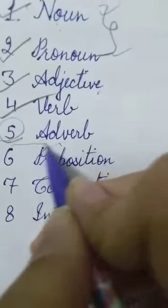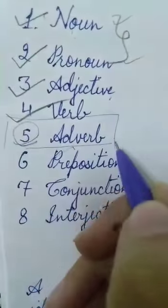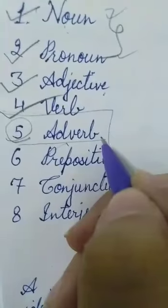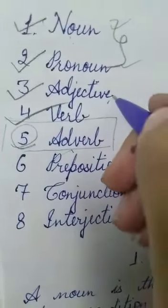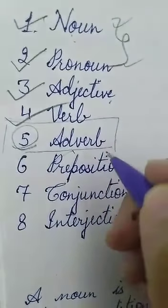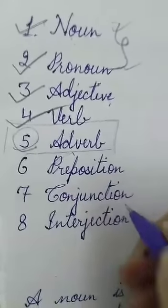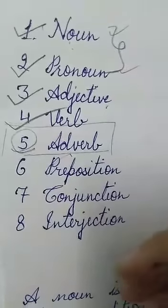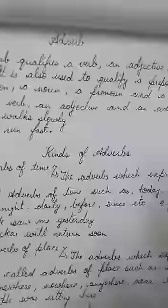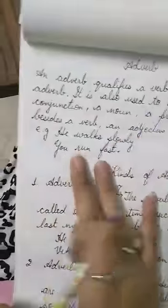Now we move on to today's topic: adverb. Today we are going to read this topic. What is adverb? Adverb qualifies adjective, verb, another adverb, preposition, and conjunction. So this is our today's topic — adverb. Let's read its definition.